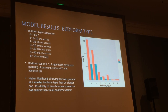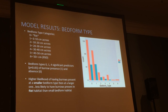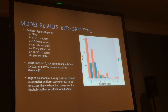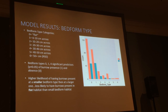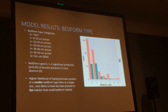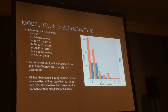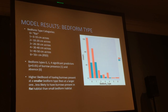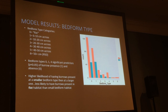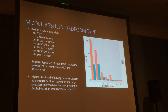For bed form type, I had six categories: zero being flat and six being greater than half a meter across, or RSD habitat. The statistical model found that bed form types zero, one, and four were all significant predictors of burrow presence and absence. We found a higher likelihood of burrows being present at smaller bed form types than at larger ones. Interestingly, we were also less likely to have burrows present in flat habitat — they occurred at higher rates in areas with at least small sand ripples.